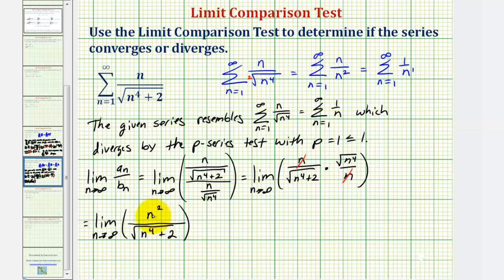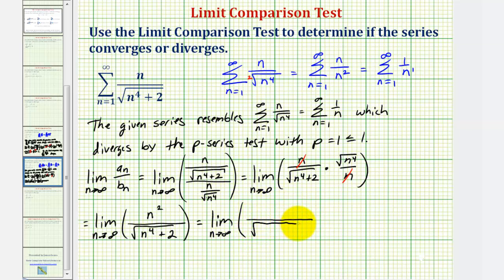To find this limit, notice the numerator is degree two, and the denominator — being the square root of n to the fourth — is also degree two. Therefore, since the degrees are the same, the limit equals the ratio of leading coefficients, which is one over one. Another way to show this is to divide everything by the highest degree of n in the denominator, which is n to the fourth under the square root. Dividing the denominator gives the square root of n to the fourth over n to the fourth plus two over n to the fourth; since the square root of n to the fourth equals n squared, we divide the numerator by n squared, giving n squared over n squared, which simplifies to one.